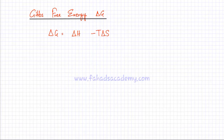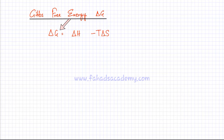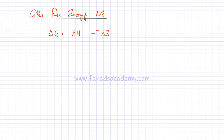In this lecture we're going to talk about Gibbs free energy, which is delta G. This is the amount of energy that is available for a system to do some sort of mechanical work. The equation for delta G is: delta G, or Gibbs free energy, is equal to the enthalpy minus T delta S.